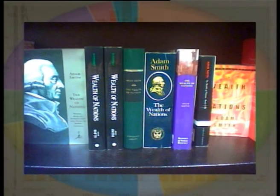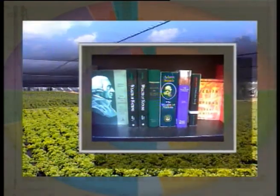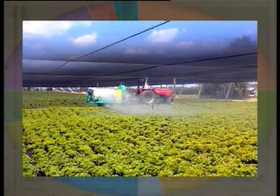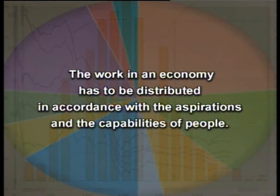It has to decide what jobs have to be done and by whom. For example, it has to decide who will grow food in the economy, who will take up different jobs like writing computer programs, and so on. The work in an economy has to be distributed in accordance with the aspirations and the capabilities of people.